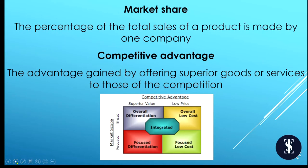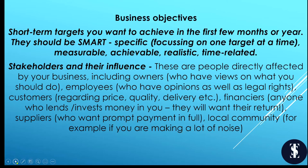Market share: the percentage of the total sales of a product made by one company. Competitive advantage: the advantage gained by offering superior goods or services to those of the competition. Business objectives are short-term targets you want to achieve in the first few months or the first year. They should be SMART: Specific — focusing on one target at a time; Measurable; Achievable; Realistic; Time-related.